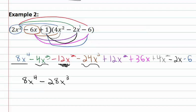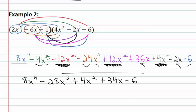The negative 12x squared plus 12x squared plus 4x squared gives us just plus 4x squared. Then there's 36x minus 2x is 34x, and finally that minus 6 at the end. And we've got our final polynomial by multiplying the trinomials together: 8x to the 4th minus 28x cubed plus 4x squared plus 34x minus 6.